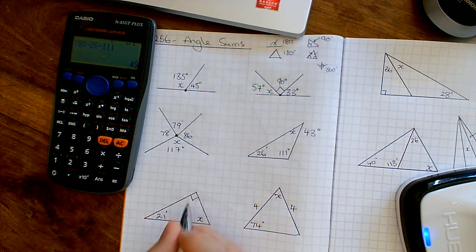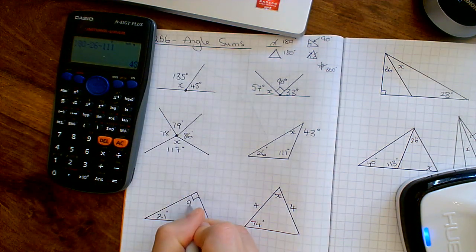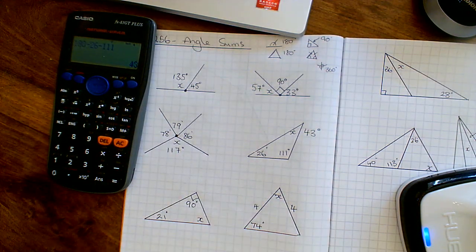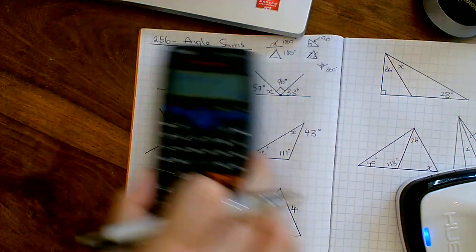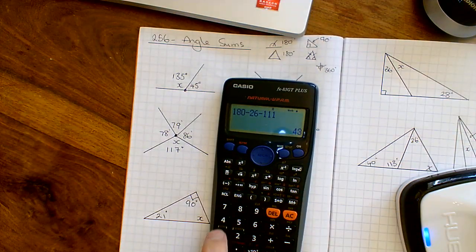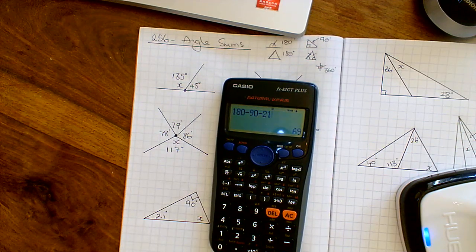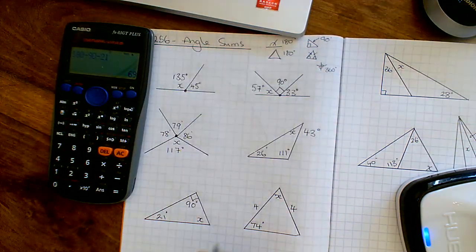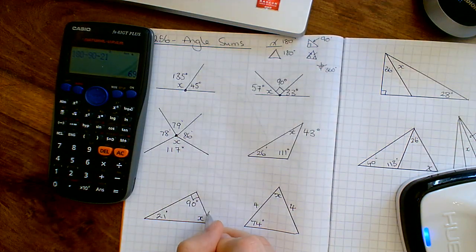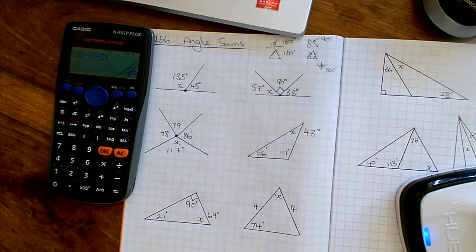Next one — angles in a triangle again. Let's write the 90 degrees in so we can actually see it. Angles in a triangle add up to 180, so we start with 180, take away the 90, and then take away the 21, and we end up with 69 degrees for the angle at the bottom.